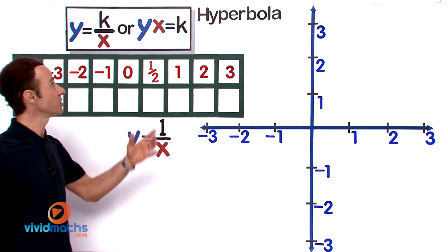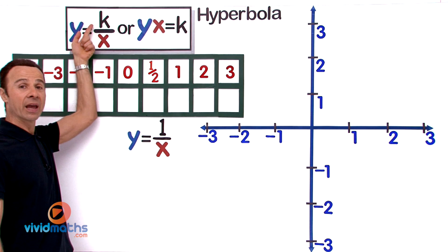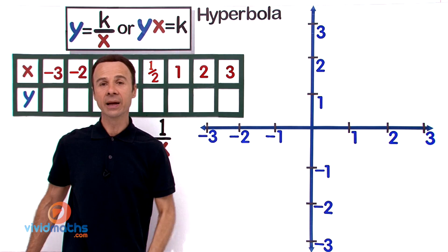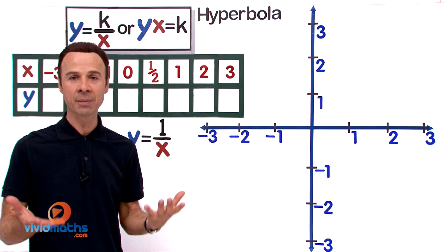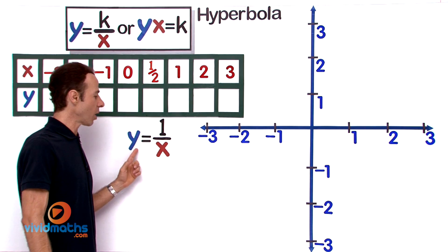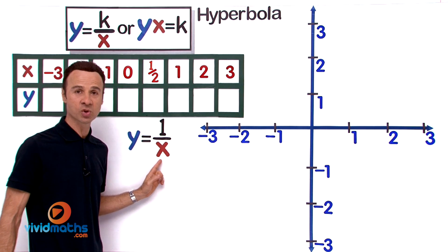It looks kind of like this: y equals k over x, sometimes referred to as y times x equals k. What is that k? It's a constant—it could be any number—and in this particular example it happens to be 1. So y equals 1 over x, that's what we are about to draw.